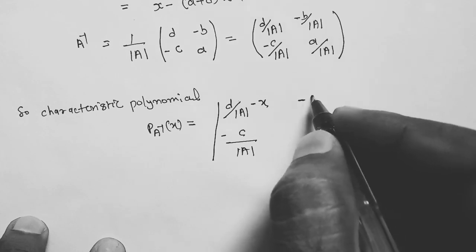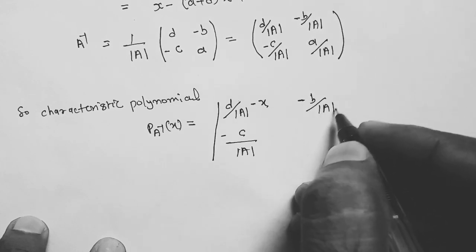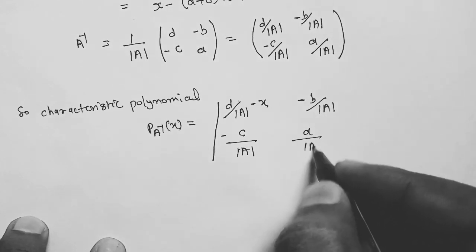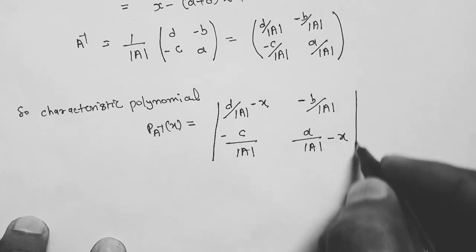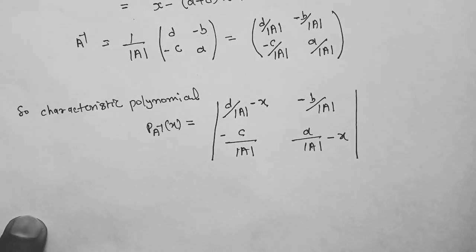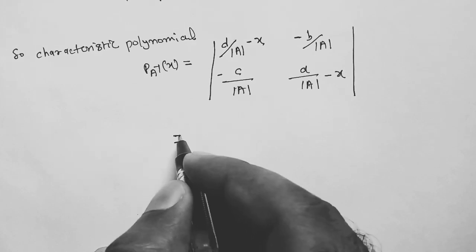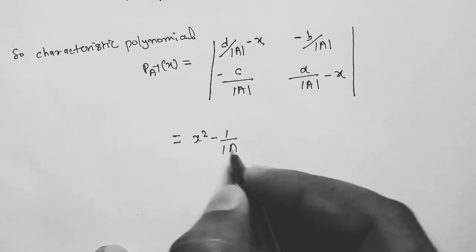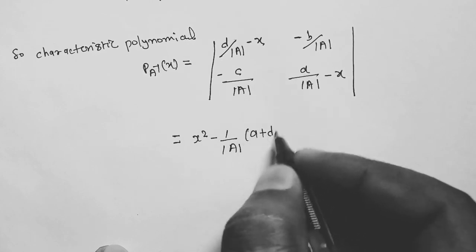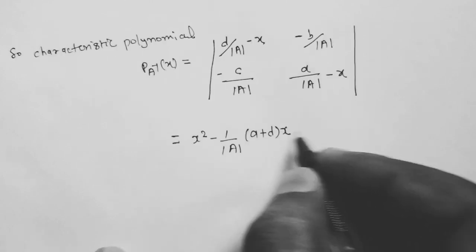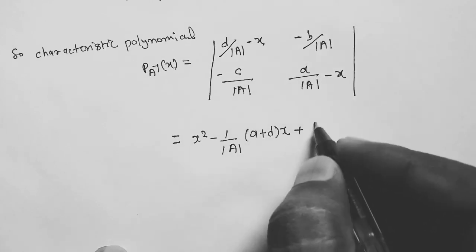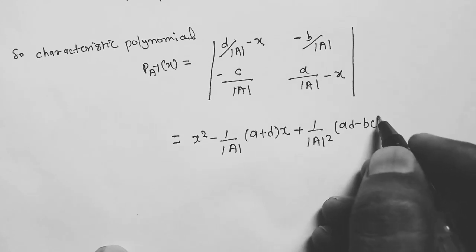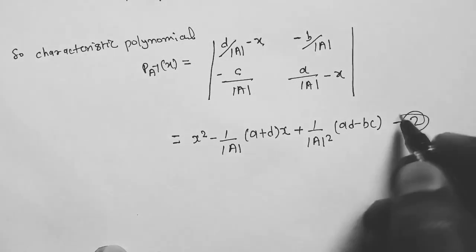P_{A⁻¹}(x) equals x squared minus (1 over det(A))(A plus D)x plus (1 over det(A)) squared times (AD minus BC). This is equation number 2.